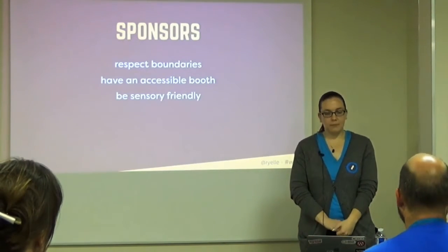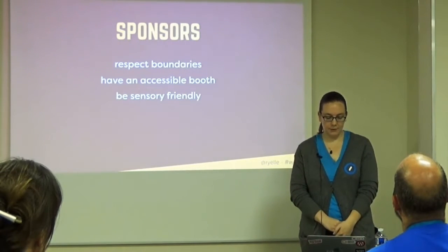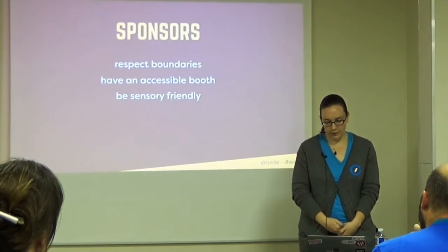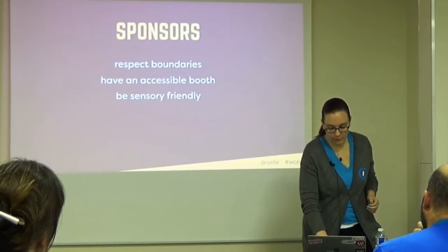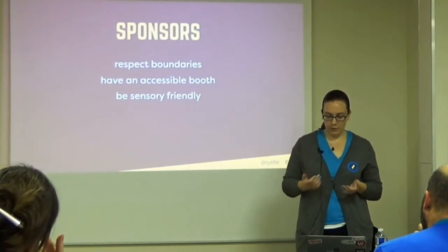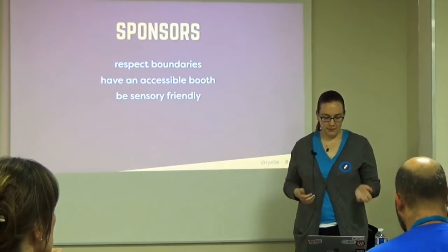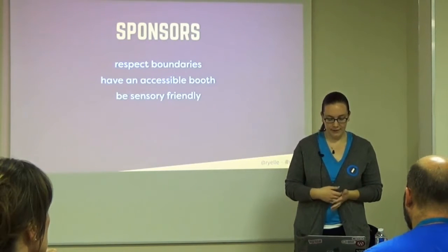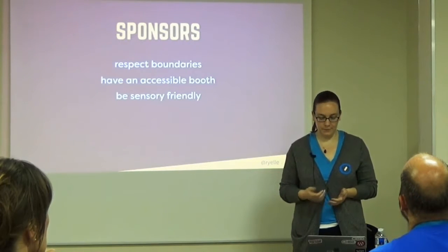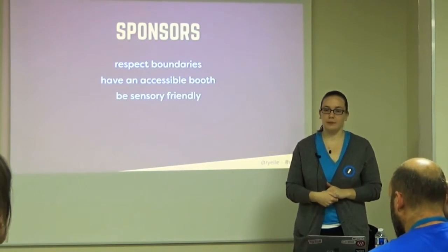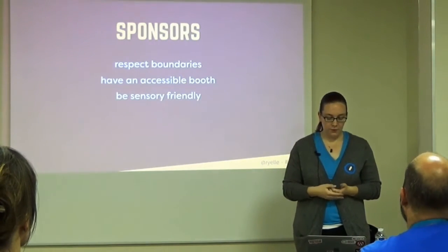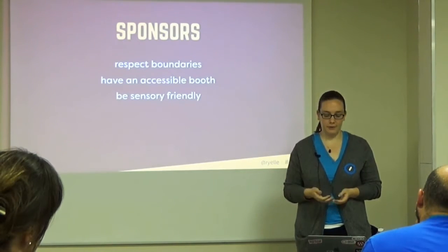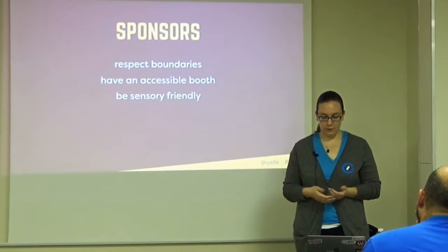If you're a sponsor, those same tips apply, plus a few more. Respect boundaries — if someone comes up to your booth with big headphones on and doesn't want to engage, respect that. Don't drag someone reluctant into the center of attention. Have an accessible booth — make sure a wheelchair user can still get into your space, which means about a meter of space between objects, probably more if people are standing around. Sensory friendliness applies to sponsor swag too. Avoid items that make noise or flash a lot — basically, if you wouldn't give it to a five-year-old you had to share a room with, don't use it for swag.